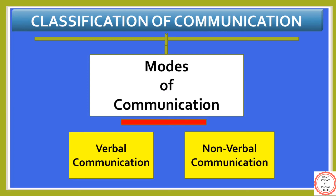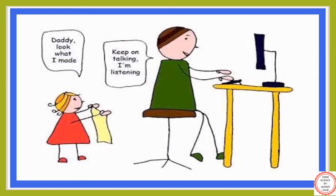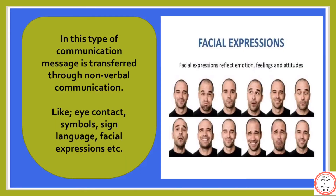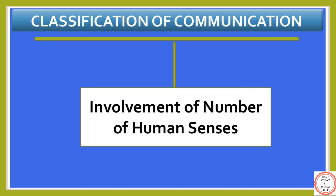The next classification of communication is based on the modes of communication: verbal communication and non-verbal communication. Verbal communication includes the use of words and sounds to express yourself. Non-verbal communication is where the message is transferred through eye contact, symbols, sign language, facial expressions, etc. A relatable example of non-verbal communication is when you commit a mistake in front of guests and your mother gives you a look — you immediately know you've done something wrong.